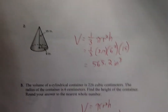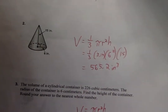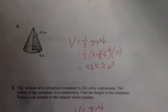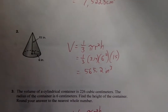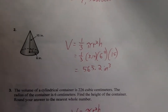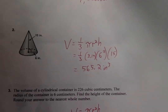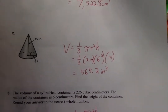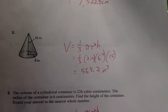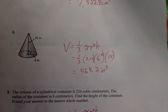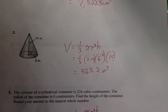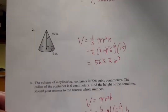Up next, we had to find the volume of a cone, everybody. That's one-third times pi times radius squared times the height. Replace each variable: 565.2 inches cubed.